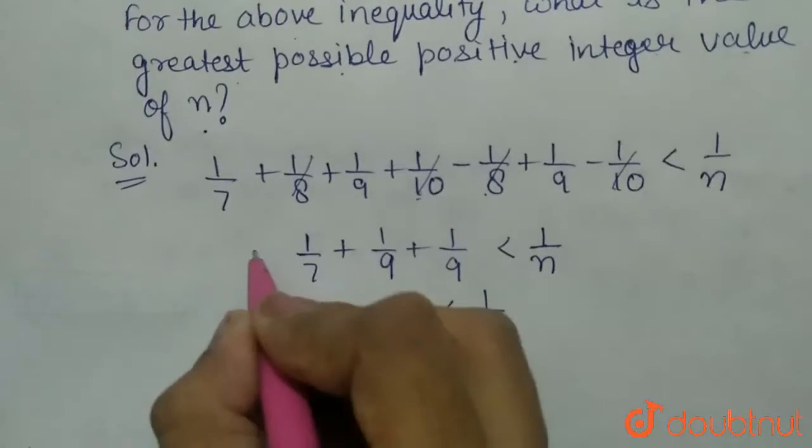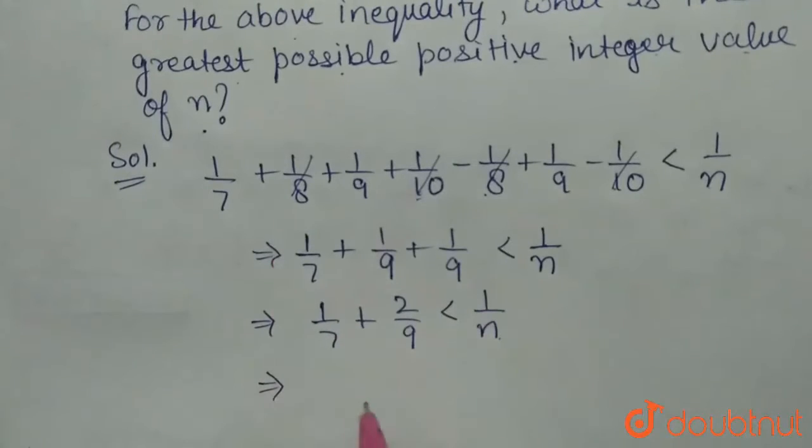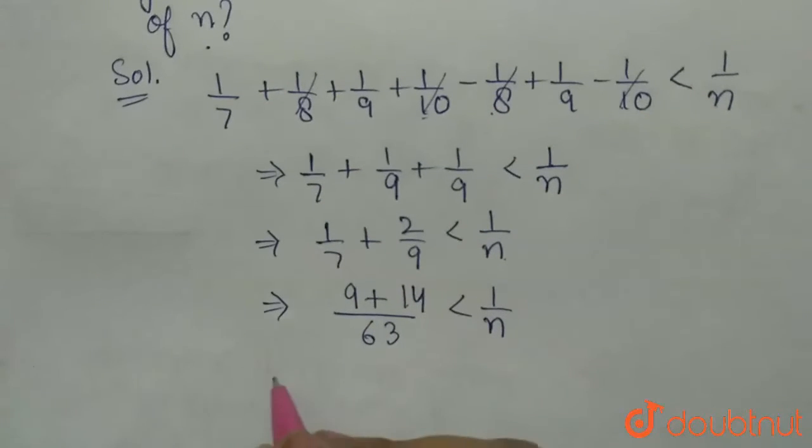Now, taking the LCM, the LCM will be 63 and we will get 9 + 14 less than 1/n, which will be equal